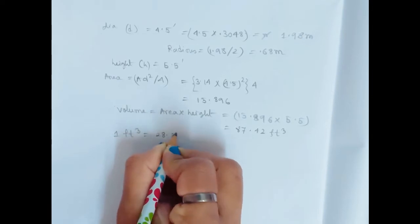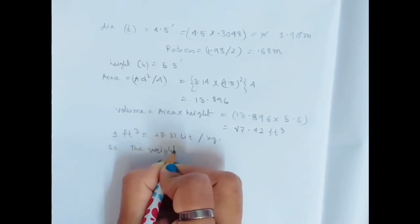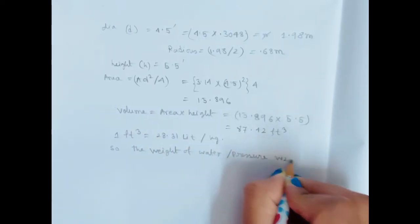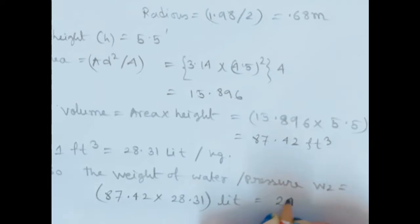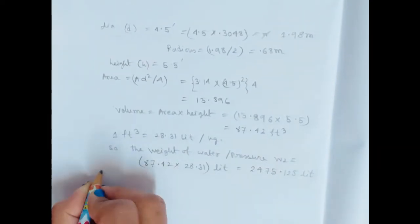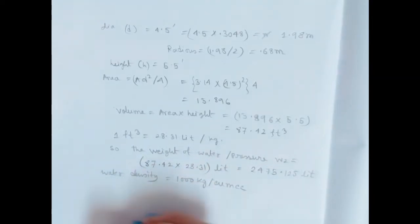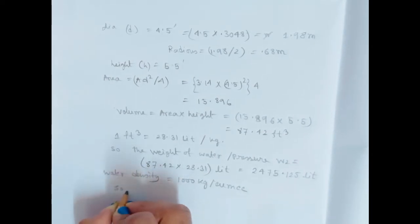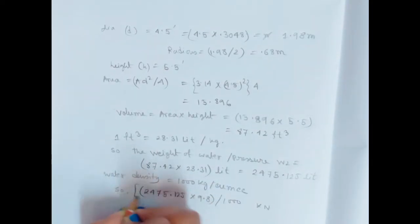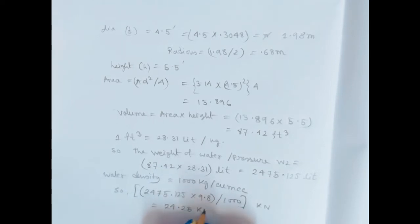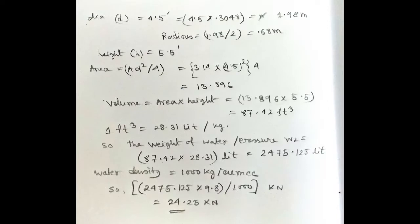Now we calculate the volume of the water tank, which will be 87.42 cubic feet. We know one cubic foot equals 28.31 liters, so the water volume in liters will be 87.42 × 28.31 = 2475.125 liters. Using the water density, we can calculate the water pressure in kilonewtons. This calculation is based on a residential building.